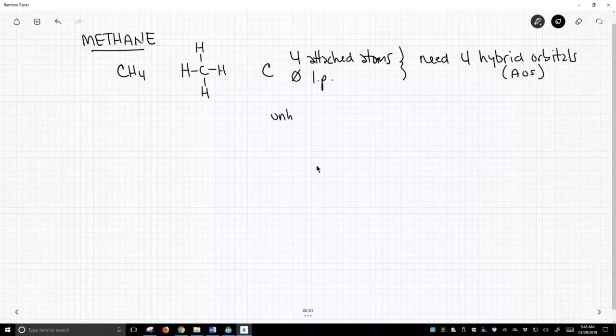So unhybridized, what does carbon look like? At least in its valence orbitals. Well, we have an S. Particularly, that's the 2S orbital. And we have three 2P orbitals. Well, each of these P orbitals, one is Px, one is Py, and one is Pz.